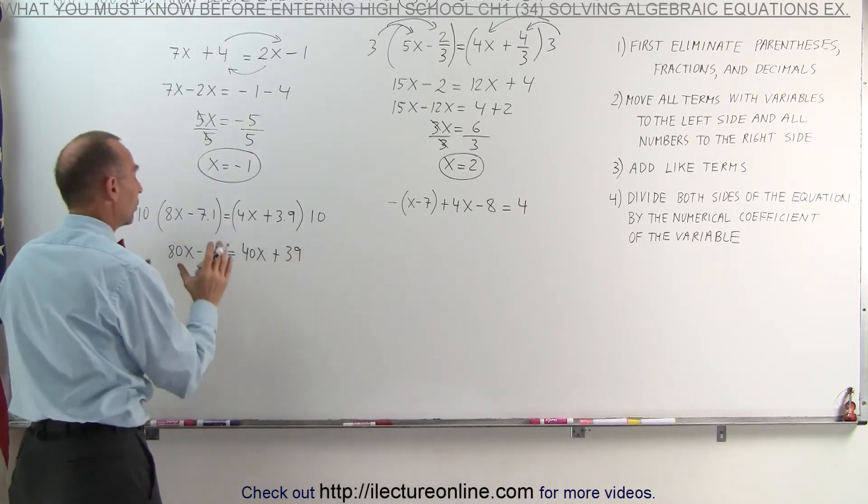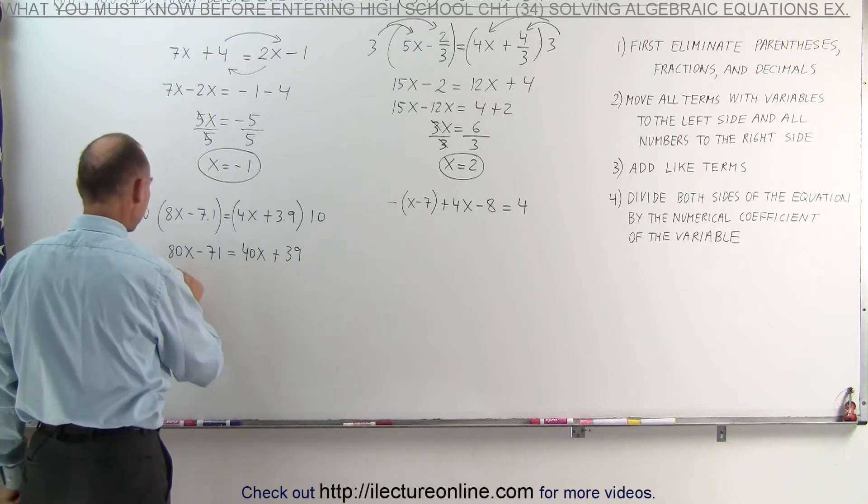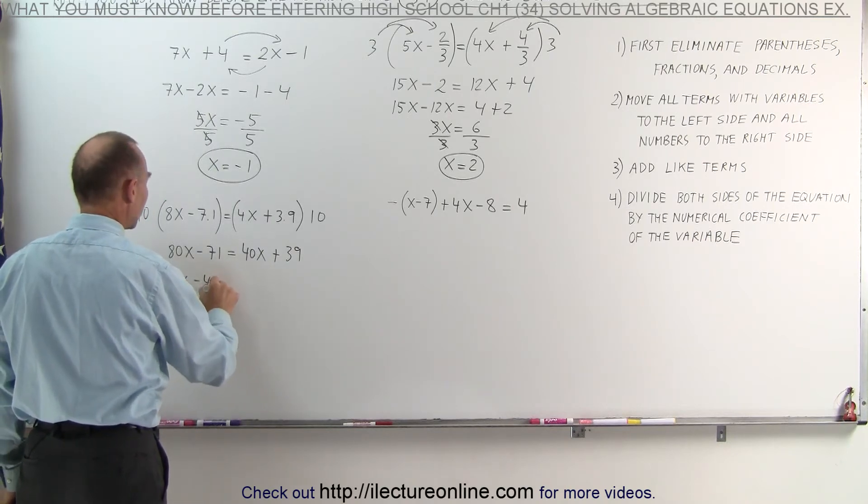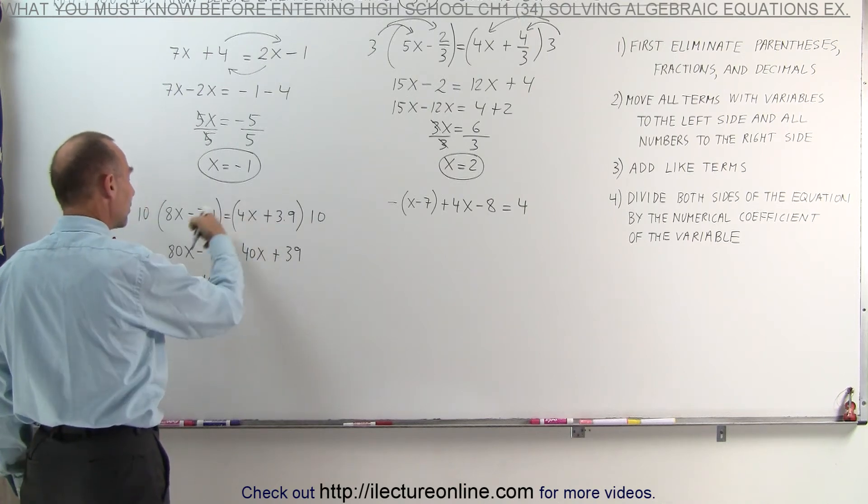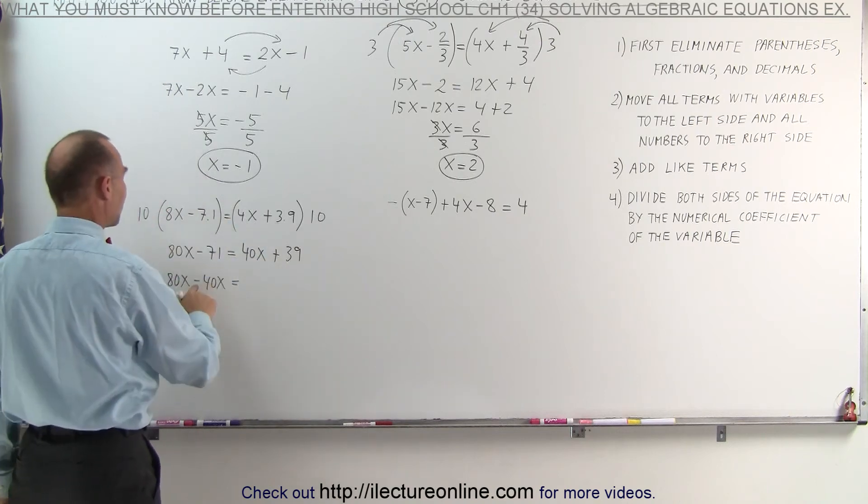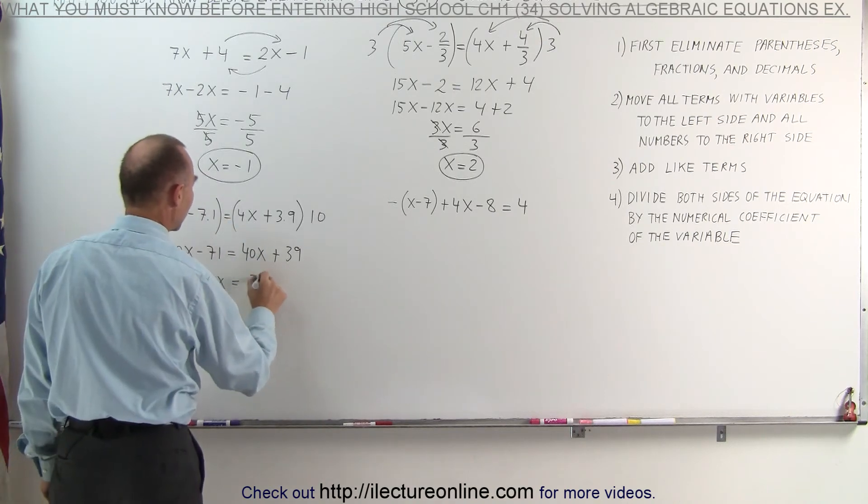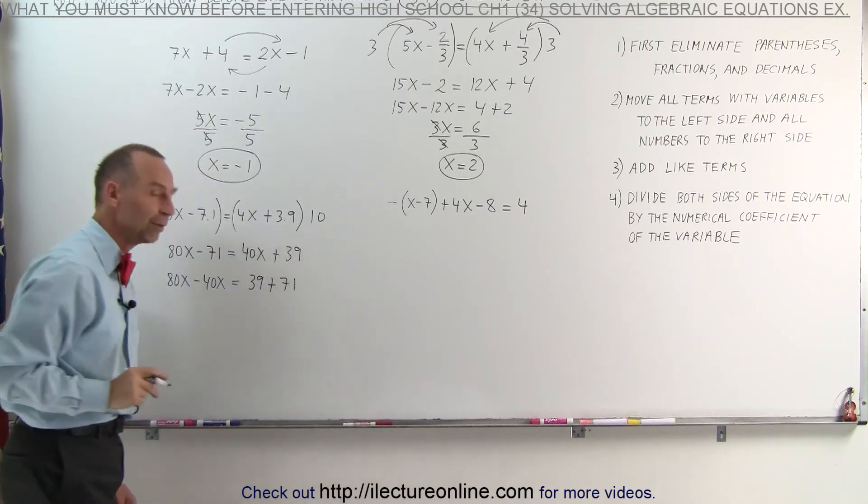Now we move all the terms with the variable to the left side, all the other numbers to the right side. 80x minus 40x. Remember, the signs change. From the plus 40x, when we cross the equal sign, we get a minus 40x. And here we have 39 plus 71. The negative 71 becomes a positive 71.